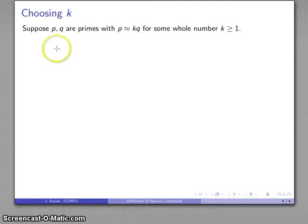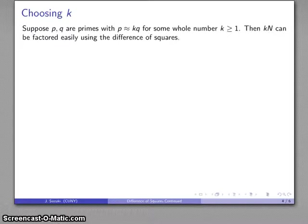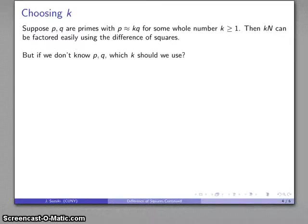So, this suggests the following. Suppose I have p and q, which are prime numbers, and p is approximately equal to k times q for some whole number. It's p is 2 times q, 3 times q, 5 times q, whatever. It's close to a multiple of q. Then, k times n can be factored very easily using the difference of perfect squares.